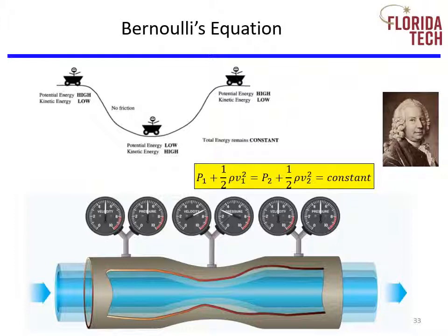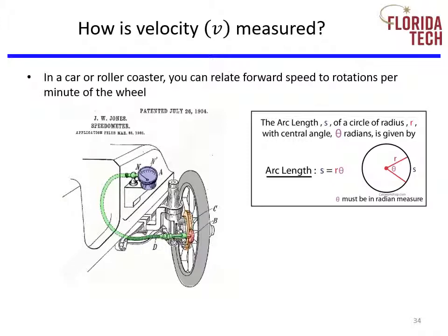If friction is present, the roller coaster car would not make it back to the top, appearing as though there's a loss of total energy — the energy was actually converted to heat. A similar thing happens to total pressure in the presence of frictional losses. Velocity appears in energy equations and Bernoulli's equation, which raises the question: how is velocity measured? In a car or wheeled vehicle, we can relate forward speed to wheel RPM.